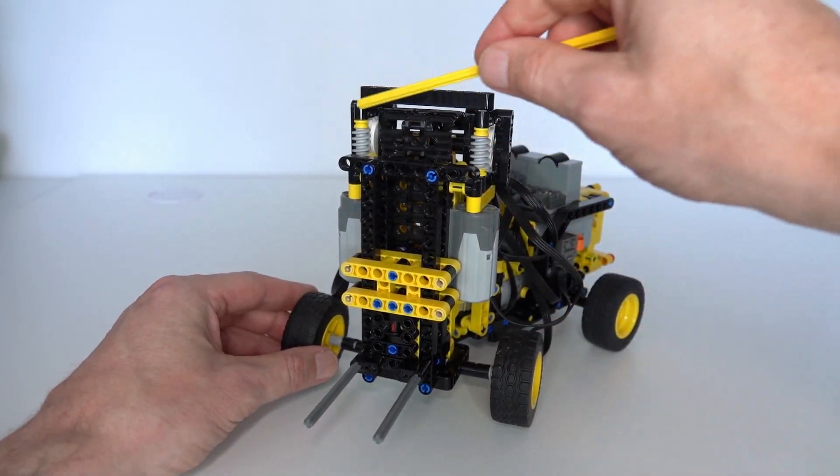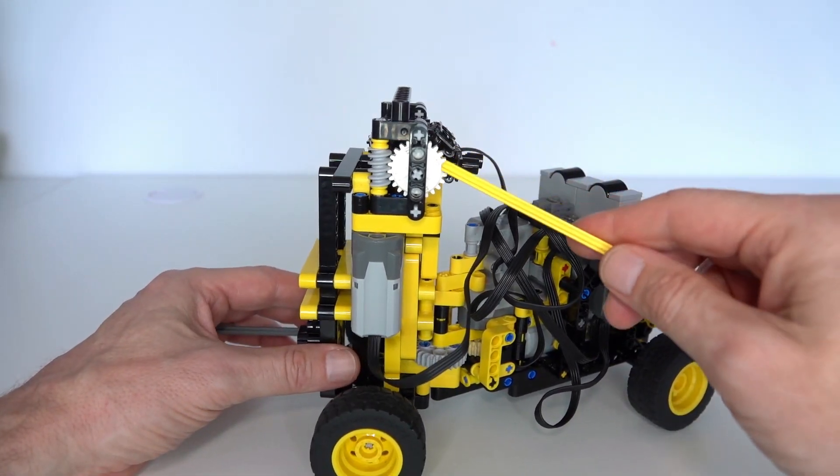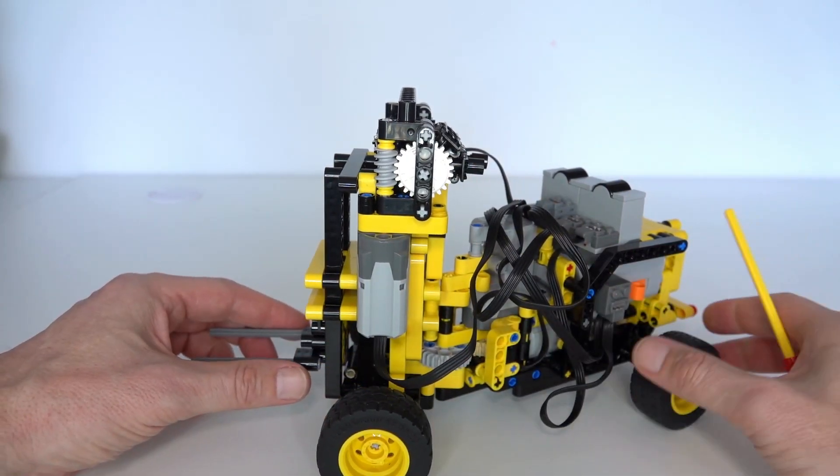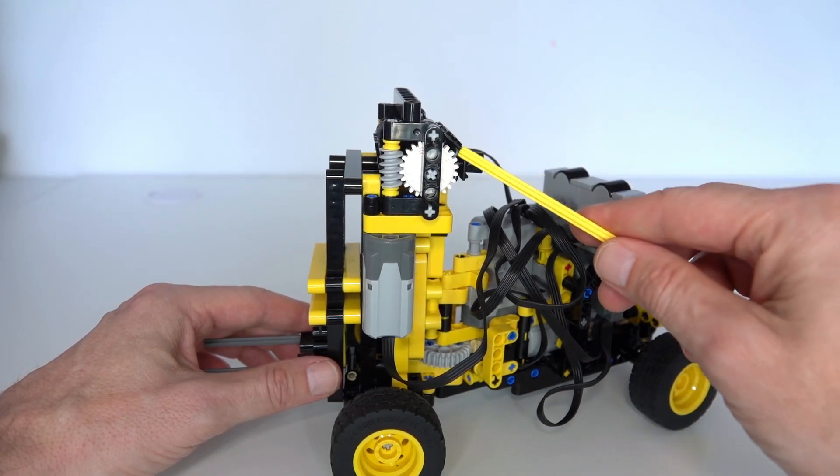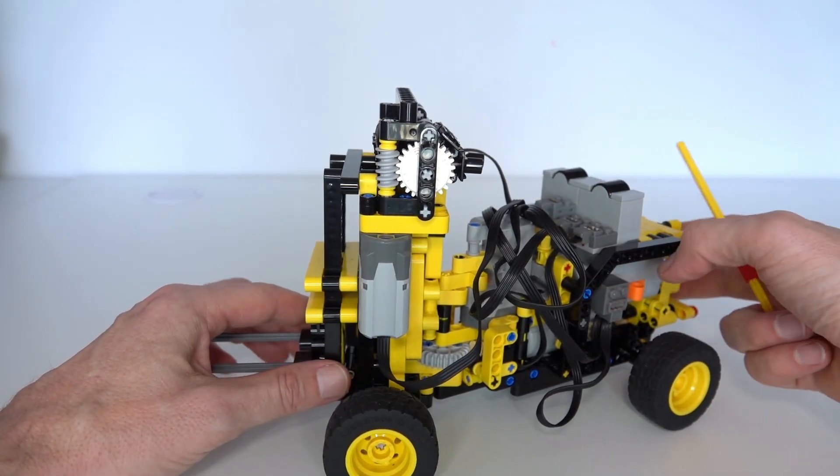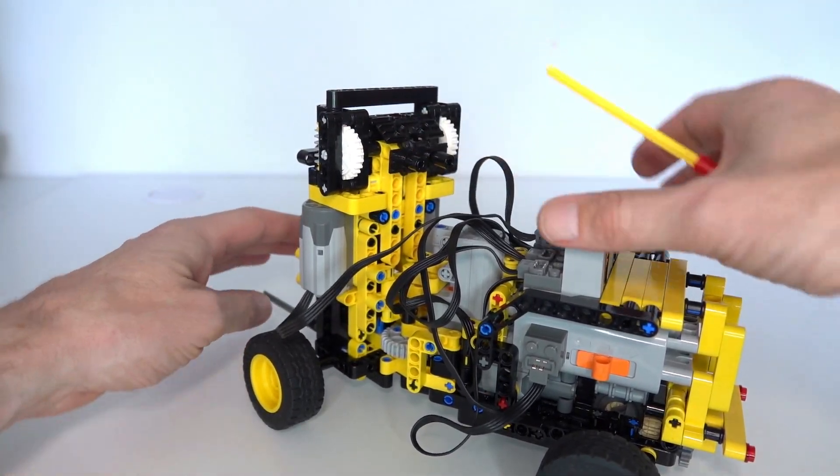Now these both drive worm gears and the worm gears connect onto 24 tooth clutch gears. And of course you need clutch gears so once the forks do reach the limit, either at the top or the bottom, those gears will slip.